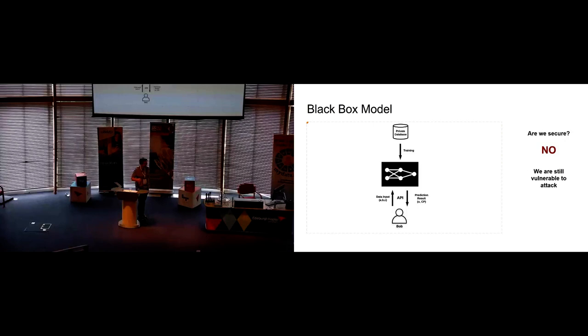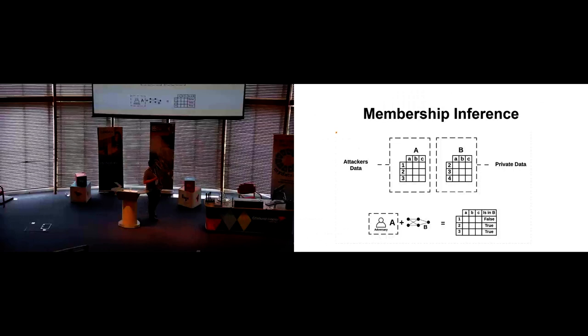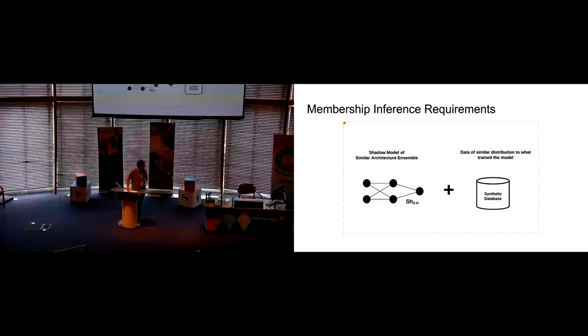So first of all, we look at the membership inference attack, which is where we have two very similar databases. I want to know if my database A has any instances which are contained in database B, and we can actually do this. All that we need is, and this is based on a couple of assumptions, we need to know approximately the architecture of the black box model which we want to try and reverse engineer, and we also need to have some sort of synthetic database which is similar to the one that the model was trained on.